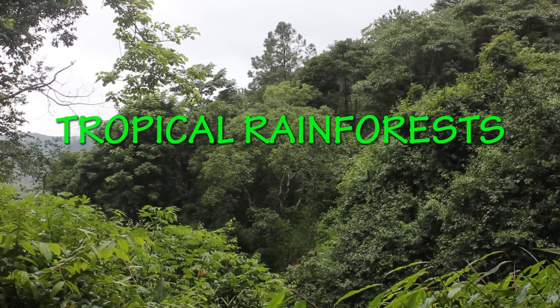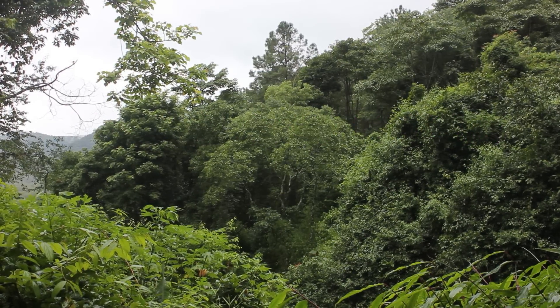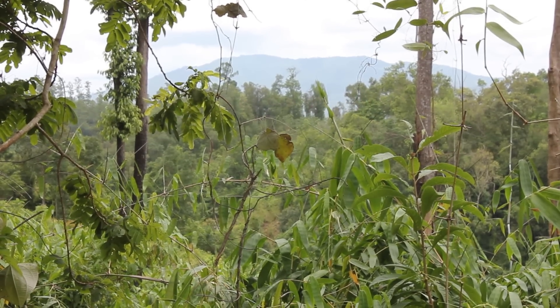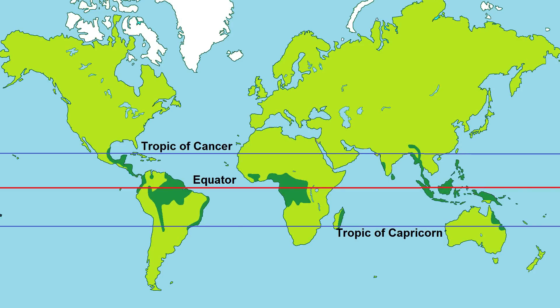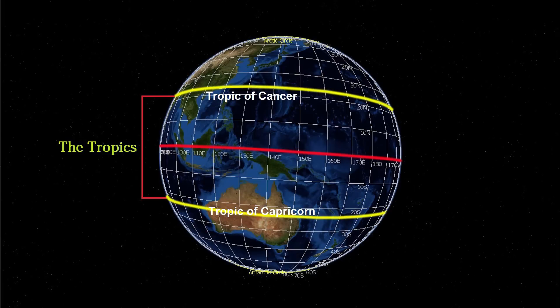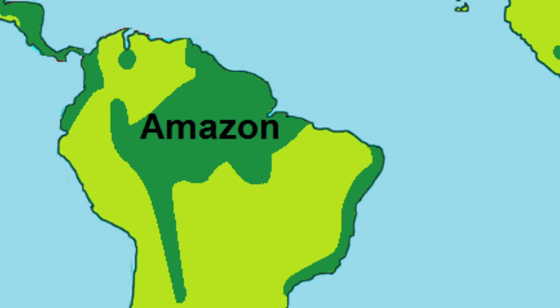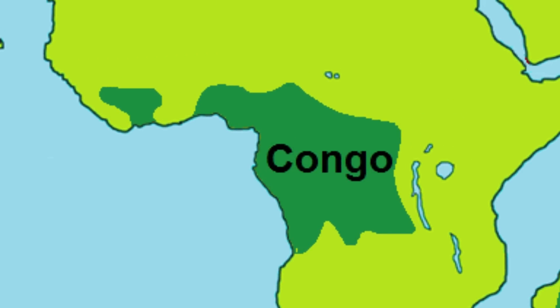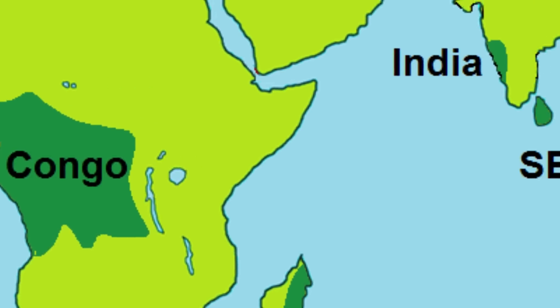What are the features that are typical of all tropical rainforests? Tropical rainforests cover about 6-7% of the Earth's land surface and are mainly located in the tropics — the regions between the Tropic of Cancer and the Tropic of Capricorn. The world's largest rainforests are the Amazon rainforest of South America, the Congo River Basin in West Africa, and the rainforests of Southeast Asia.